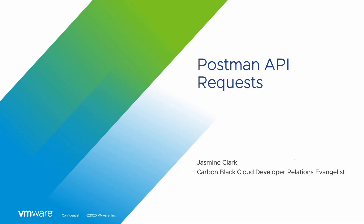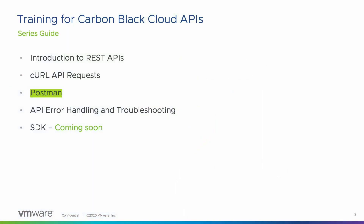Hello everyone, my name is Jasmine Clark and I'm an evangelist for the Developer Relations team. I'm excited to present this training series for the Carbon Black Cloud APIs. This series includes an introduction to REST APIs, calling Carbon Black Cloud APIs using CURL requests and Postman, API error handling and troubleshooting, and using the Carbon Black Cloud SDK. This lesson is the third in the series and introduces Postman, teaching us how to get alerts from Carbon Black Cloud using Postman requests.